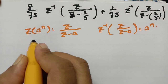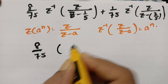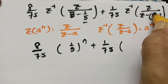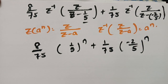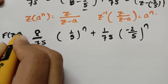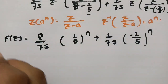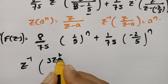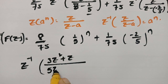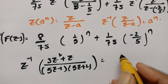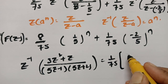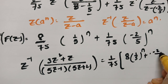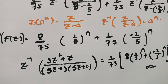Substituting A = 1/5 and the second term's root = -2/5: Z⁻¹{F(Z)} = (8/75)(1/5)ⁿ + (1/75)(-2/5)ⁿ. Therefore, Z⁻¹ of (3Z² + Z) / ((5Z - 1)(5Z + 2)) = (1/75)[8(1/5)ⁿ + (-2/5)ⁿ]. Thank you for watching.